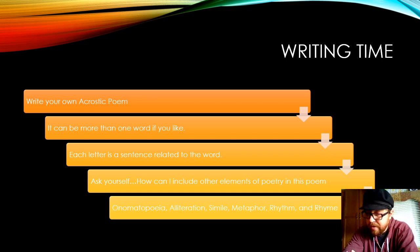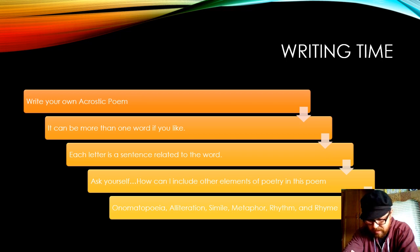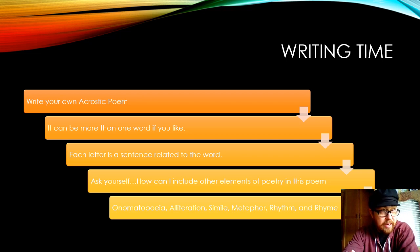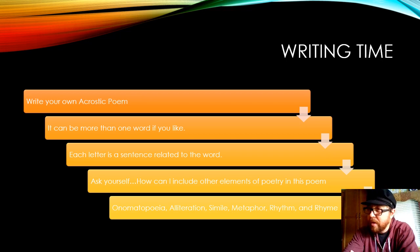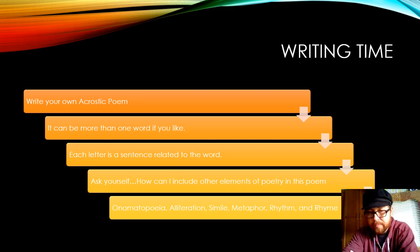Simile — comparing things using the words 'like' or 'as.' Metaphor — referring to something else, referring to a thing other than what you're actually talking about. Rhythm — hopefully you're reading your poems out loud and they have a certain rhythm to them. And rhyme — you can use rhyming words.